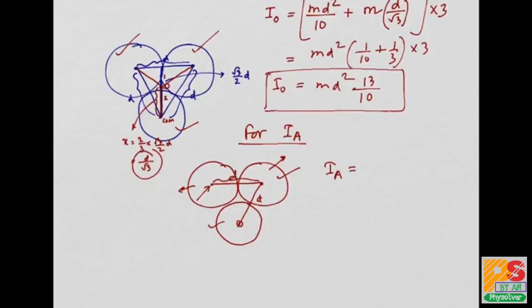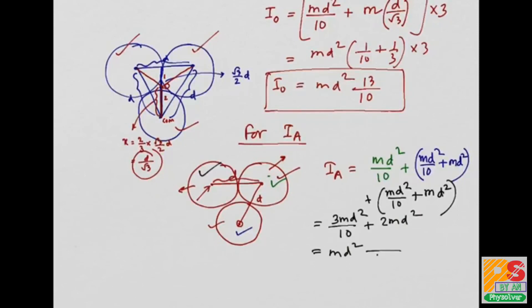Therefore I_A, for this sphere is MD squared by 10, which is I_COM. For this sphere it is MD squared by 10 plus MD squared. And for the last sphere, that is this sphere, it is I_COM plus MX squared, which is nothing but 3 MD squared by 10 plus 2 MD squared. MD squared common, LCM 10, gives 23 by 10 MD squared. This is I_A.